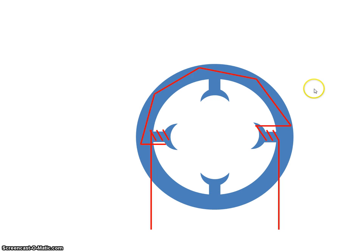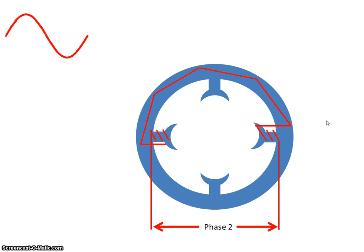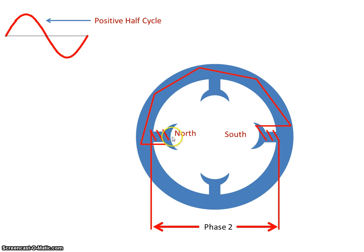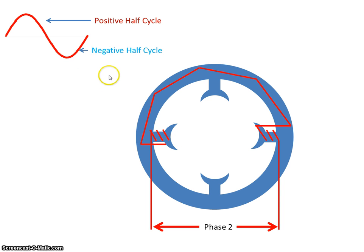Now let's say we put in windings on these poles and I apply a phase such as that. Again on the positive half cycle — this area here — using the right-hand rule, current will flow in through here. I'll get a north pole here and a south pole there. So the flux lines will be in this direction, and on the negative half cycle the current will flow in the opposite direction, so the north pole will be here and the south pole will be there, and the flux lines will be in that direction.